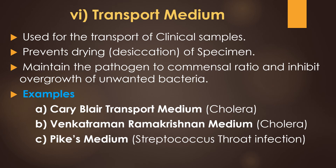The sixth type is transport medium, used for the transportation of clinical samples. It prevents drying or desiccation of specimens, maintains the pathogen-to-commensal ratio, and inhibits overgrowth of unwanted bacteria. Examples include Cary-Blair transport medium for cholera, Venkatraman-Ramakrishnan medium for cholera, and Pike's medium for streptococcal throat infection.